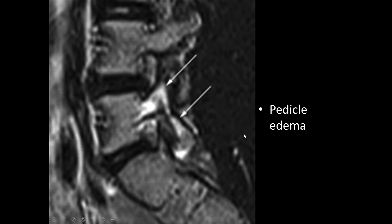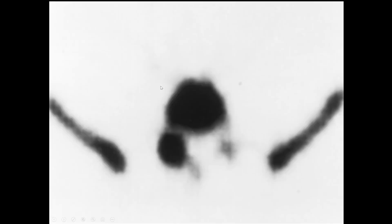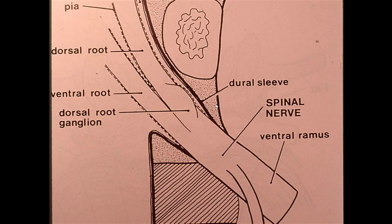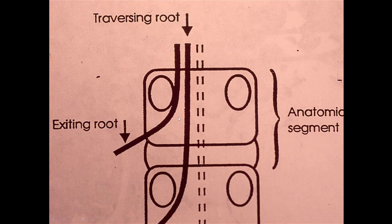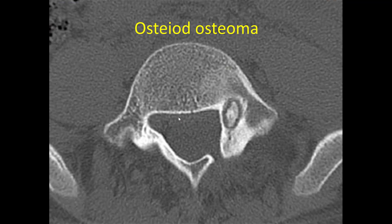So again, we get pedicle edema — if you see edema in the pedicle in a child, you have to think pars fracture. Bone scan lights up and makes it easy to diagnose. Some patients have pain because the pars fracture is right over the nerve root, specifically the dorsal root ganglion, and if this gets inflamed it can give them leg pain. One thing that can masquerade as a pars fracture on bone scan is a benign tumor in childhood called osteoid osteoma — it's not cancer, but it's extremely bright on bone scan and causes pain.